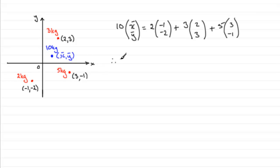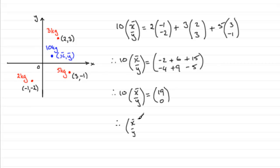So what have we got then? We've got 10 multiplied by (x bar, y bar) equals, and working out this top line gives us -2 plus 6 plus 15. And then multiplying out the bottom line gives us -4 plus 9 minus 5. So we have 10 multiplied by (x bar, y bar) equals, grouping this up, we end up with 19 on the top and the bottom line we get 0.